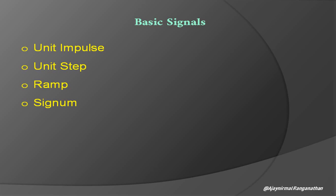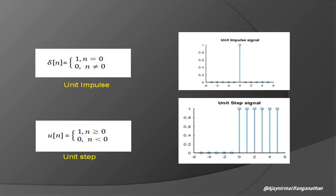We are going to discuss four signals: unit impulse, unit step, ramp, and signum. The basic mathematical expression for the unit impulse signal is del(n), which equals 1 for n equal to zero and 0 for n not equal to zero. You can see the graph on the side.